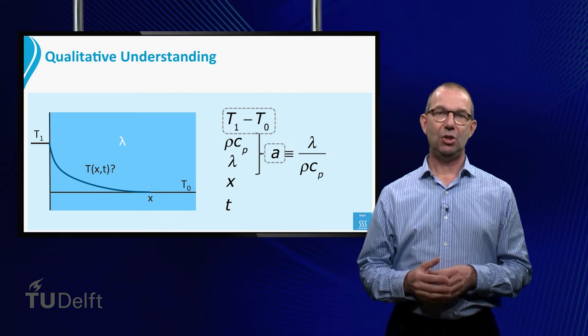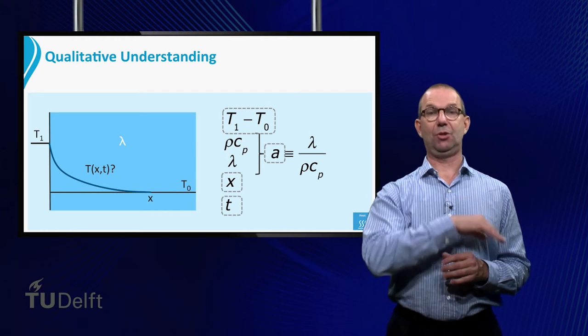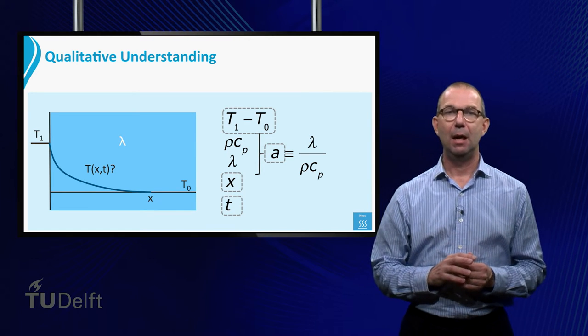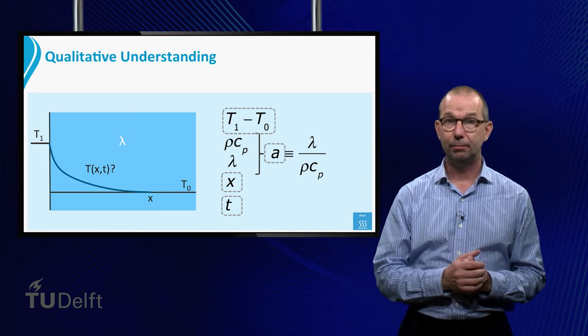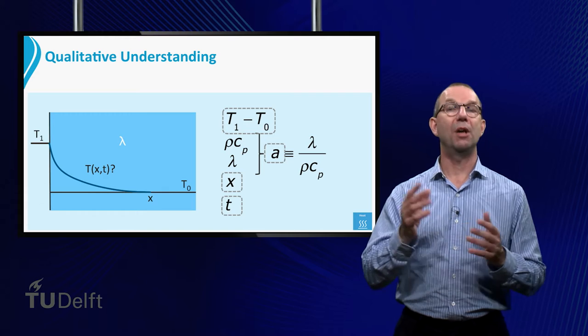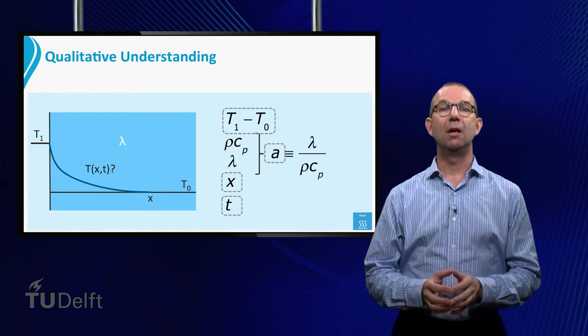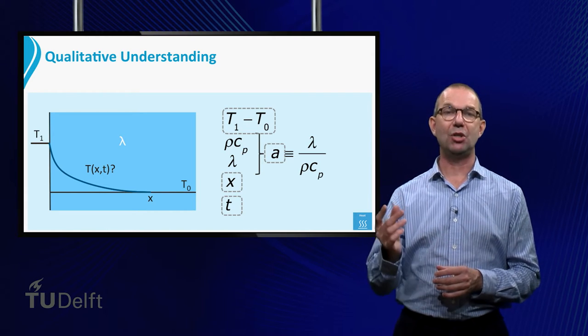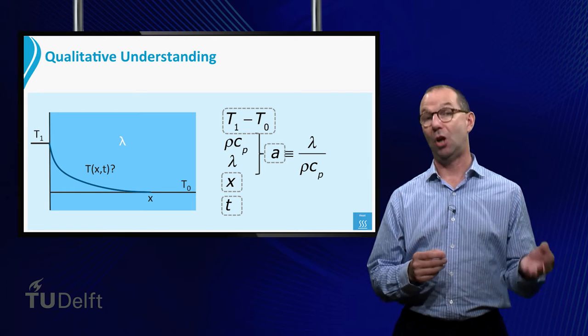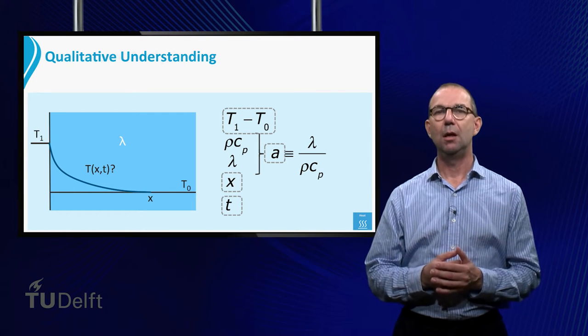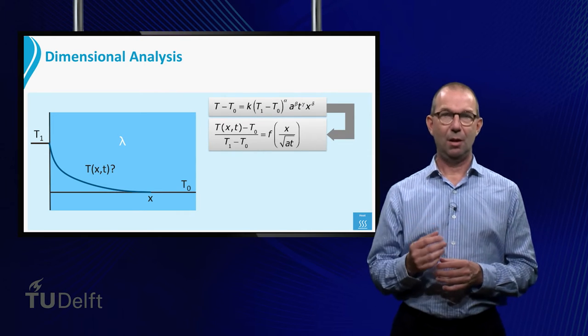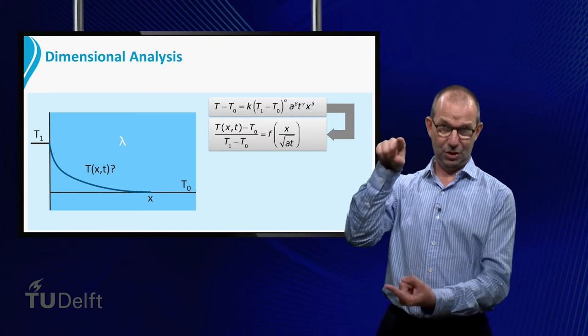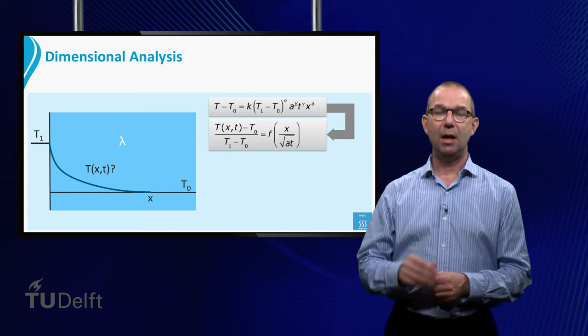Looking back, we see that we have four parameters that govern this problem, and that thus dictates the temperature change in the plate. We can perform a dimensional analysis on this problem, trying to find the temperature rise at position x at time T. The result would be that the temperature rise normalized by the driving temperature difference T1 minus T0 is a function of only one parameter.